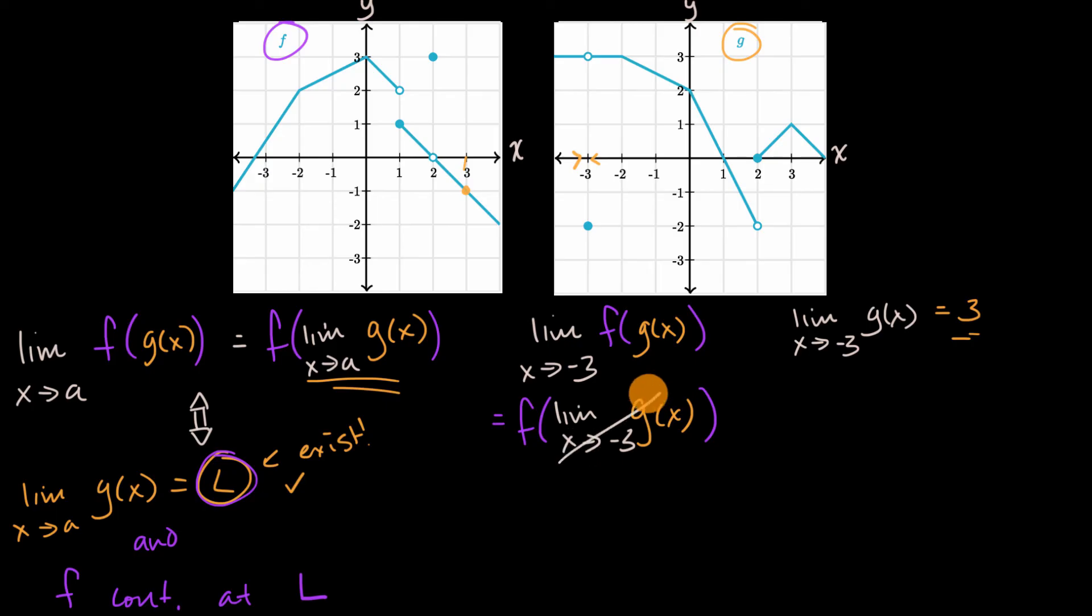And we know that this is equal to three. And we know that f of three is going to be equal to negative one. So this met the conditions for this theorem, and we were able to use the theorem to actually solve this limit.